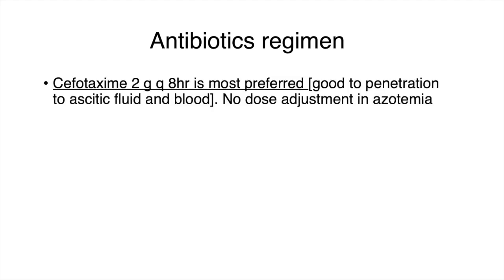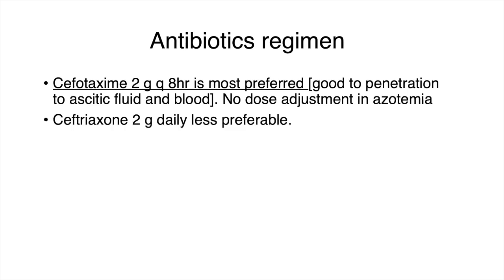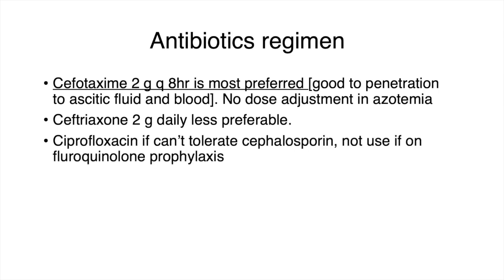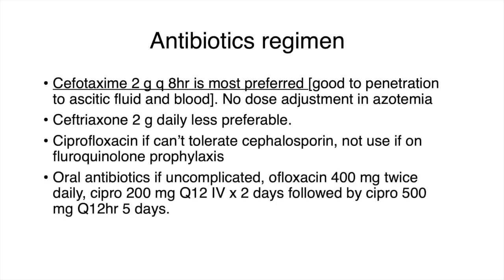The most preferred antibiotic regimen is cefotaxime 2 g every 8 hours — it has good penetration into ascitic fluid and blood, and there is no need for dose adjustment in azotemia. Ceftriaxone 2 g daily is less preferable but can be used. Ciprofloxacin can be used if the patient cannot tolerate cephalosporins, but should not be used if the patient was already on ciprofloxacin prophylaxis. For uncomplicated cases, oral options include ofloxacin 400 mg twice daily, or ciprofloxacin 200 mg IV every 12 hours for two days followed by oral ciprofloxacin every 12 hours for five days. Generally, you can start with IV therapy and de-escalate to oral once the patient improves. The total management course is five to seven days, up to ten days.